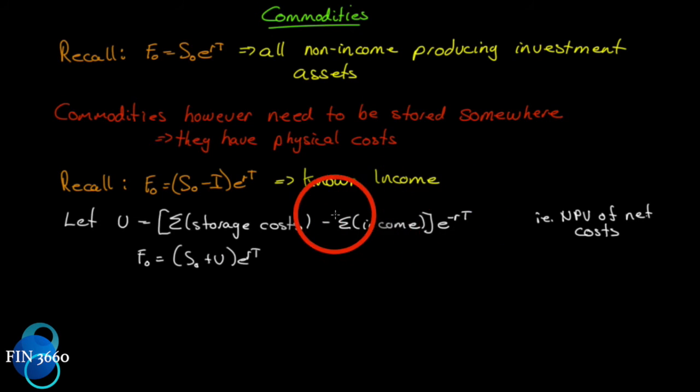Discounted backwards in time - notice the negative rT - discounted back to today. In other words, it's the net present value of net cost. Remember when I said the I in this formula is the net present value of all future income? Well, this U is just the net present value of all the storage costs minus the net present value of all the income. And since storage costs will outweigh income in most cases, if we're subtracting income for known income, we must add costs for costs.